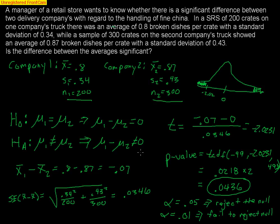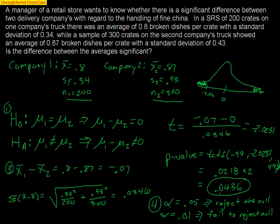So to summarize, we have four steps: step one is stating the hypotheses; step two is checking the conditions; step three is showing all the work leading up to the p-value; and step four is making the appropriate conclusion based on your significance level. At α = 0.05 we reject the null; at α = 0.01 we fail to reject the null. That's the basic idea for a hypothesis test for the difference between two means.